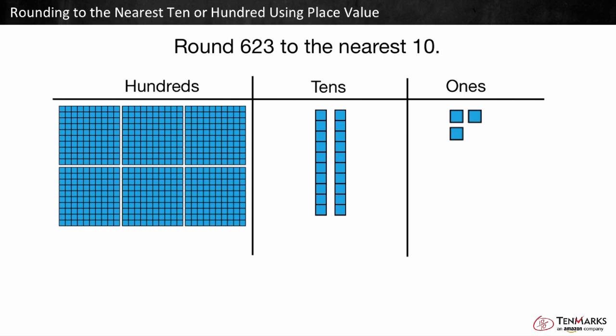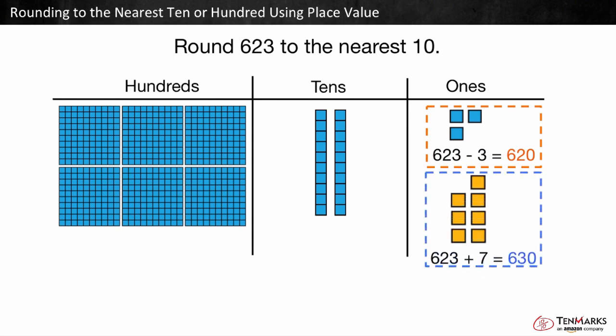Which ten is 623 closer to? 620 or 630? 623 has three ones and is three ones away from 620. 623 is also seven ones away from 630.